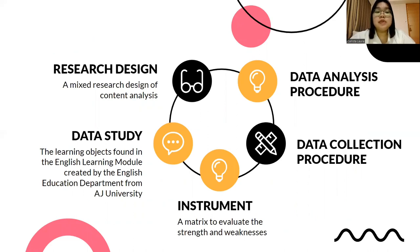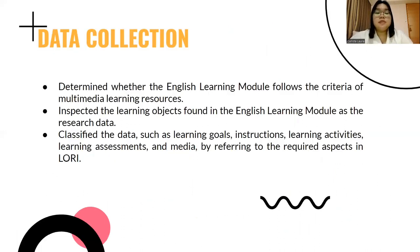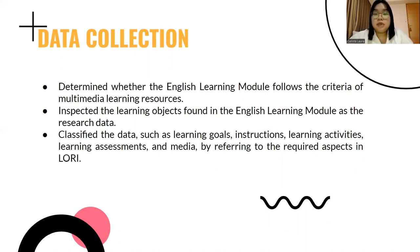A research design of content analysis is used. The data comes from the learning objects found in the English learning module, and a matrix is used as the instrument to evaluate the strengths and weaknesses. The data collection procedure consists of determining whether the English learning module follows the criteria of multimedia learning resources, inspecting the learning objects, and classifying the data such as learning goals, instructions, learning activities, learning assessments, and media.